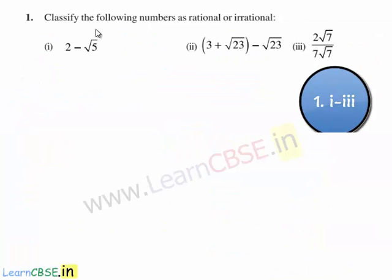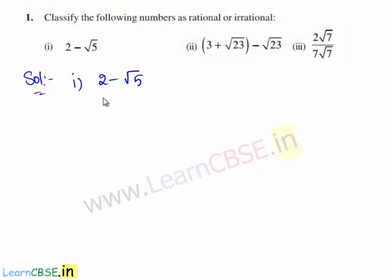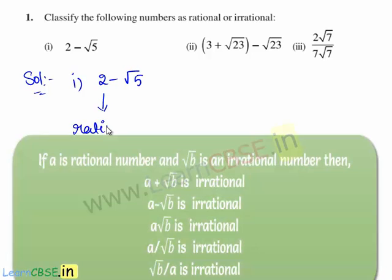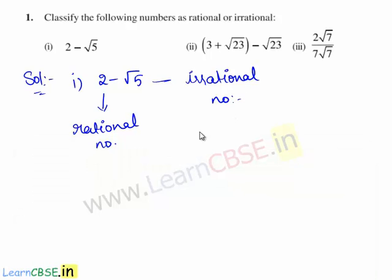Now let us move on to the fifth exercise. The first question is: classify the following numbers as rational or irrational. The first expression given is 2 minus root 5. Here 2 is a rational number and root 5 is an irrational number. Therefore the difference of a rational number and an irrational number is always an irrational number. Therefore 2 minus root 5 is an irrational number.